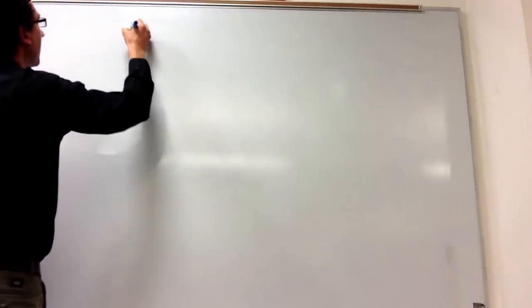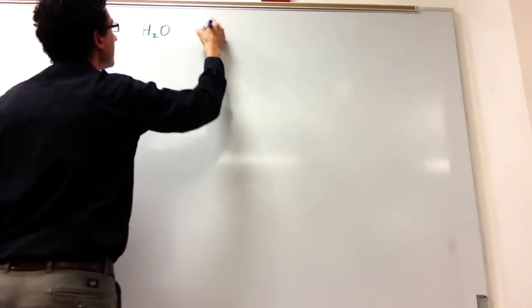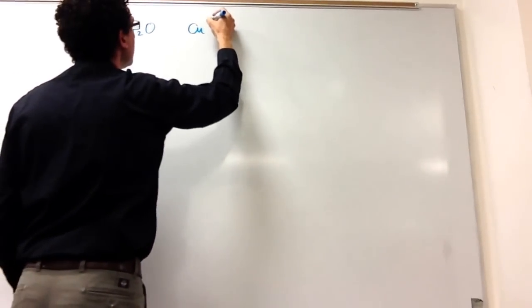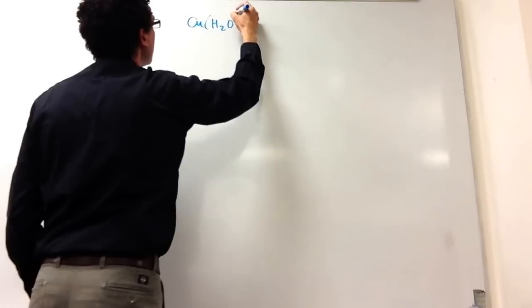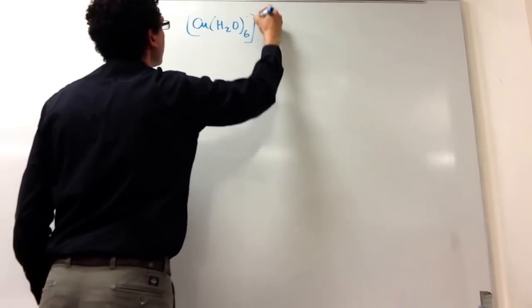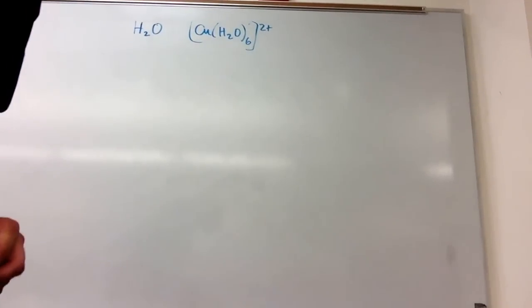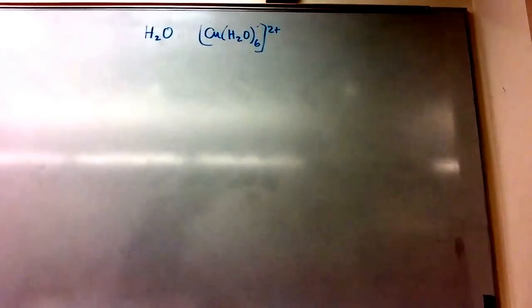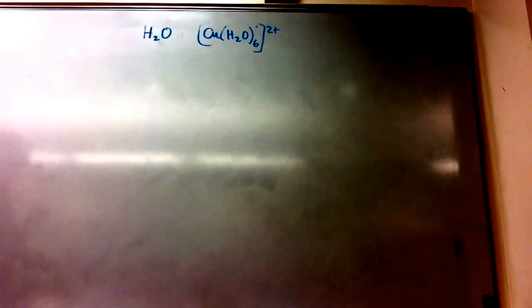For this example, we're comparing two acids: H₂O and Cu(H₂O)₆²⁺. We want to know which one is a stronger acid.